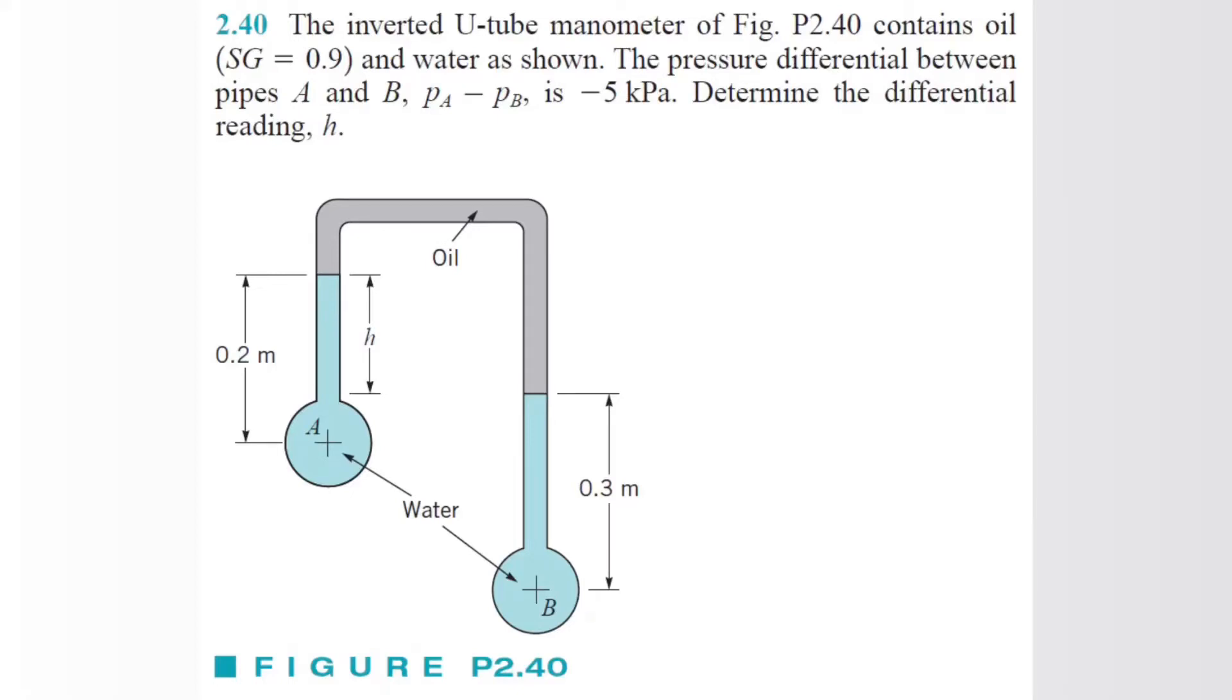All right, Yelani, we got one more. The inverted U-tube manometer. So the inverted U-tube manometer contains oil with a specific gravity of 0.9 and water. The pressure differential between the pipes A and B is negative 5 kilopascals. Determine the differential reading H.